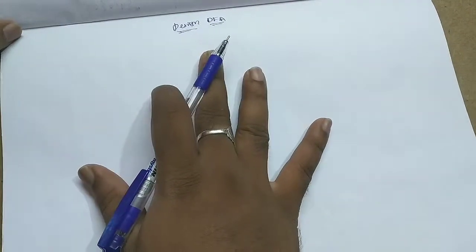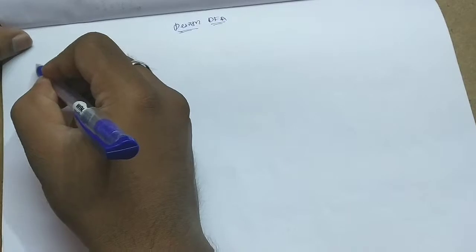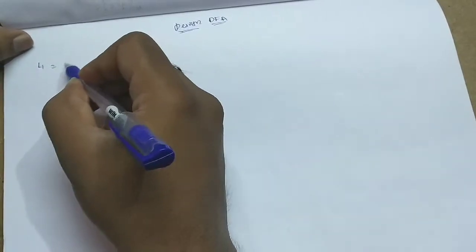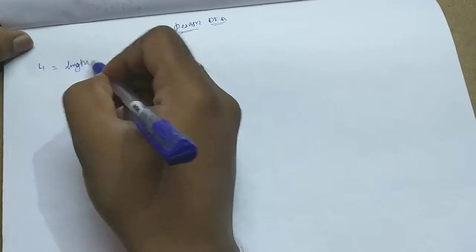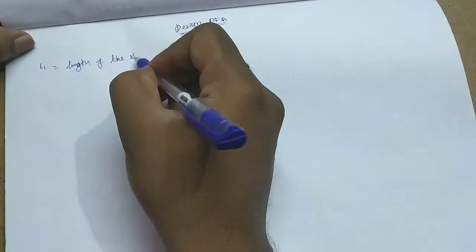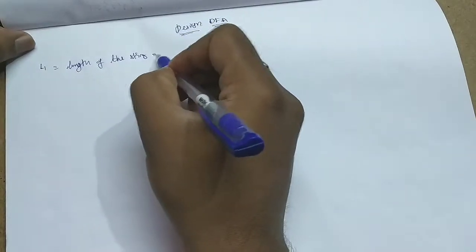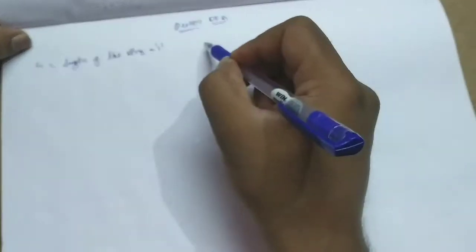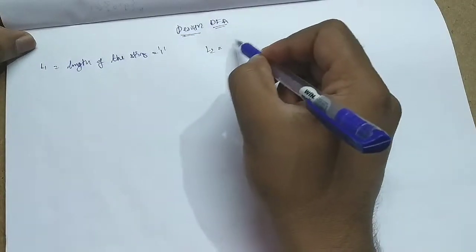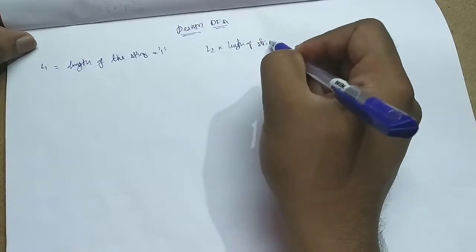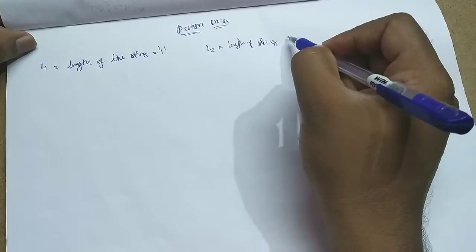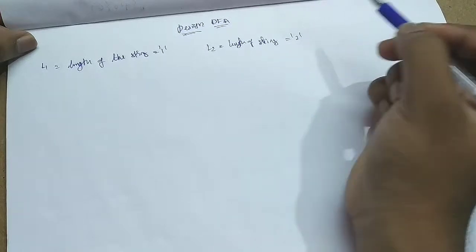In this video, we are going to design DFAs for the languages of length constraint. Languages L1 is like length of the string equal to 1, L2 is length of the string equal to 2.